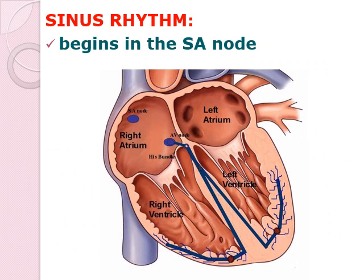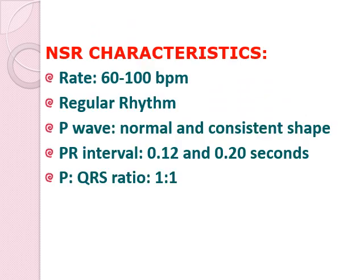There is what we call sinus rhythm, meaning the electrical impulses have originated from the SA node — that is why it is referred to as sinus rhythm. When we say NSR, that is your normal sinus rhythm. The normal sinus rhythm has the following characteristics: the rate should be 60 to 100 beats per minute. Below that is bradycardia; above that is tachycardia.